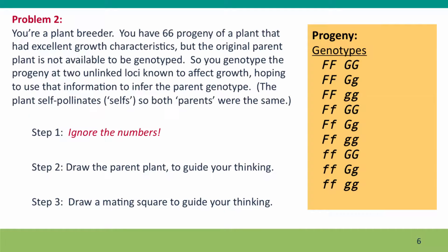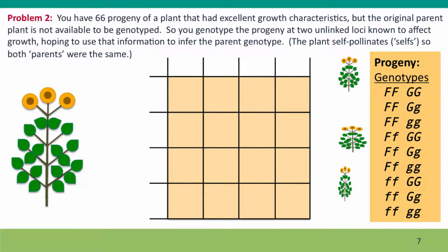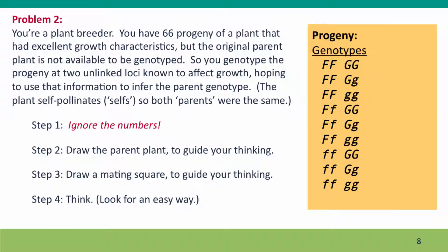We drew a picture. Next, if we're looking at a cross, it really can't hurt to draw a mating square to help us think about the issues, because the mating square combines thinking about the physical issues and the genetic issues, and it reminds us to think about the genotypes of the gametes in thinking about the genotypes of the offspring. Now we've got our mating square, and we figured that we needed to make a 4x4 mating square because we've got two alleles of two genes — that's four possible combinations of alleles in gametes.